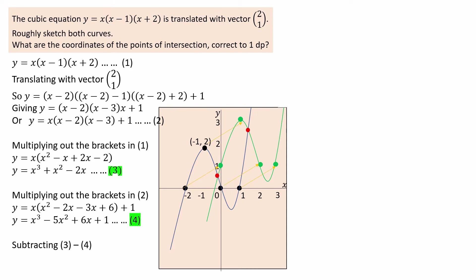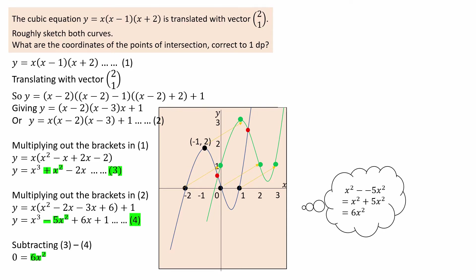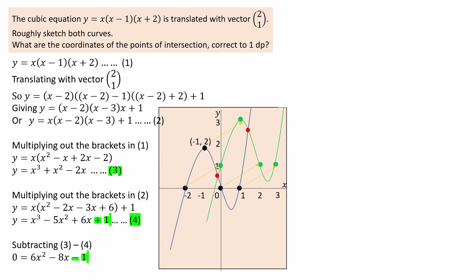To solve equations 3 and 4 to find x, we need to eliminate y by subtracting. Y take away y gives 0. X cubed take away x cubed also gives 0. X squared minus negative 5x squared equals 6x squared. Minus 2x minus 6x equals minus 8x. Finally, minus 1. Call this equation 5.